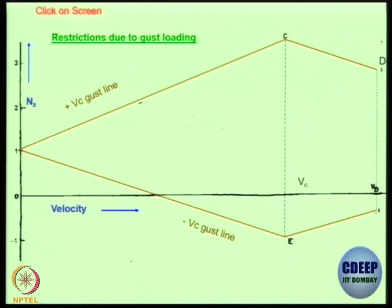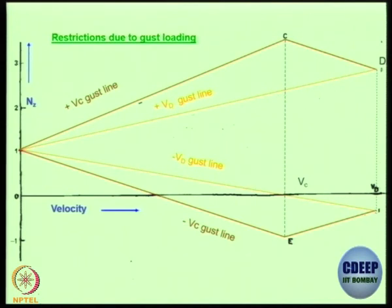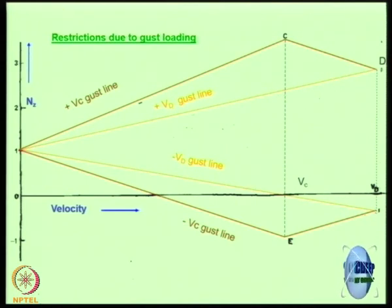If I go back to the graph, you will remember the values were 50 and 25 for up to VC and they were 25, 12.5 beyond above VC up to VD. You get this kind of a line. Now, the negative gust lines are going to be little bit inside. These are called as the limit gust lines.